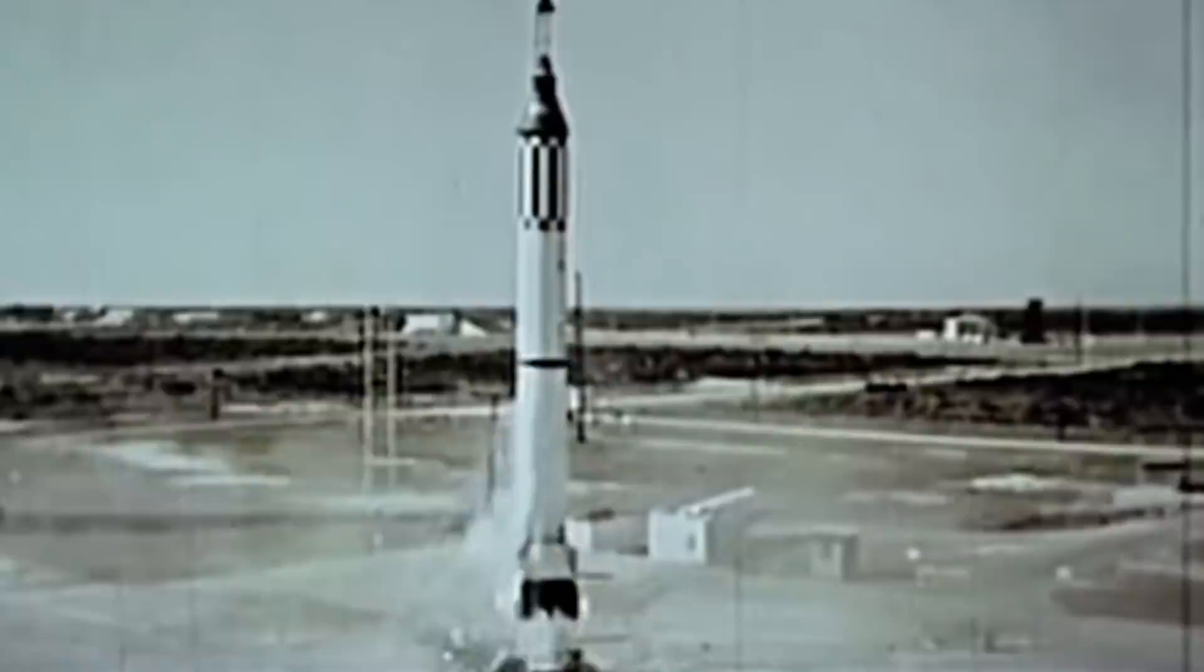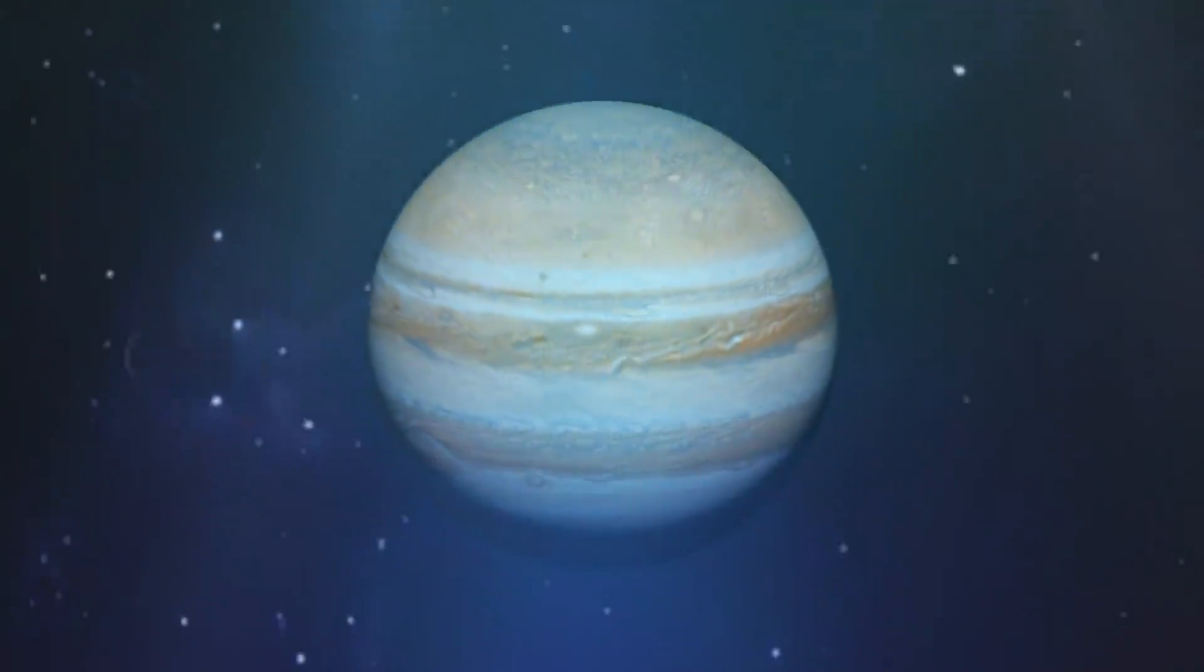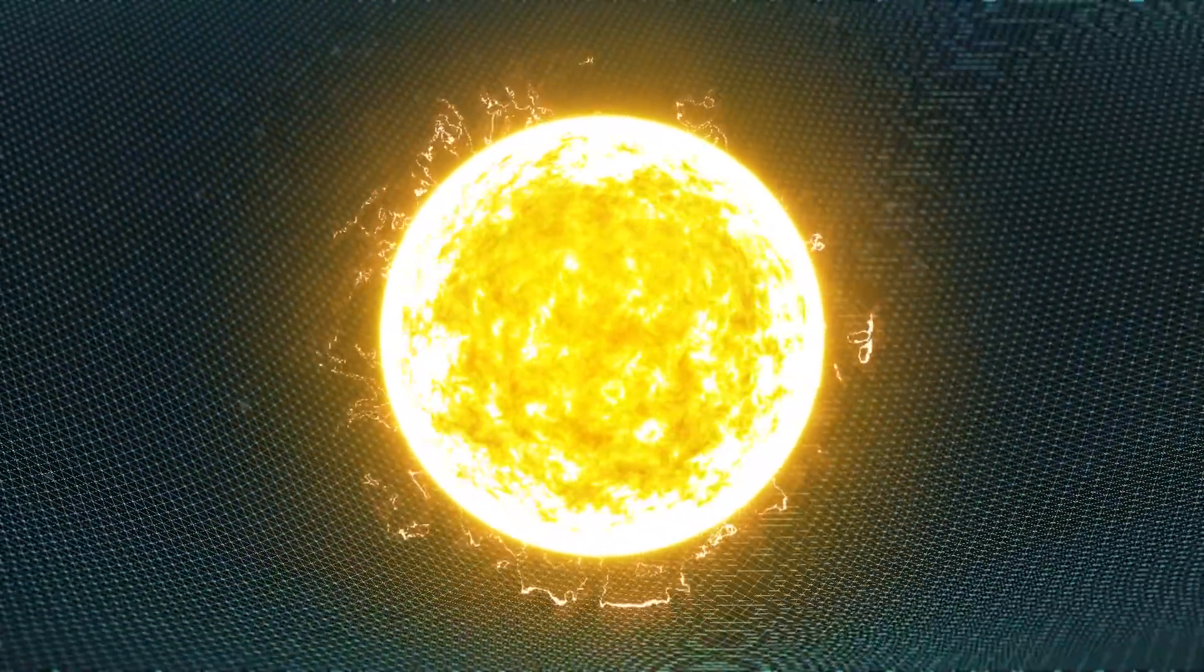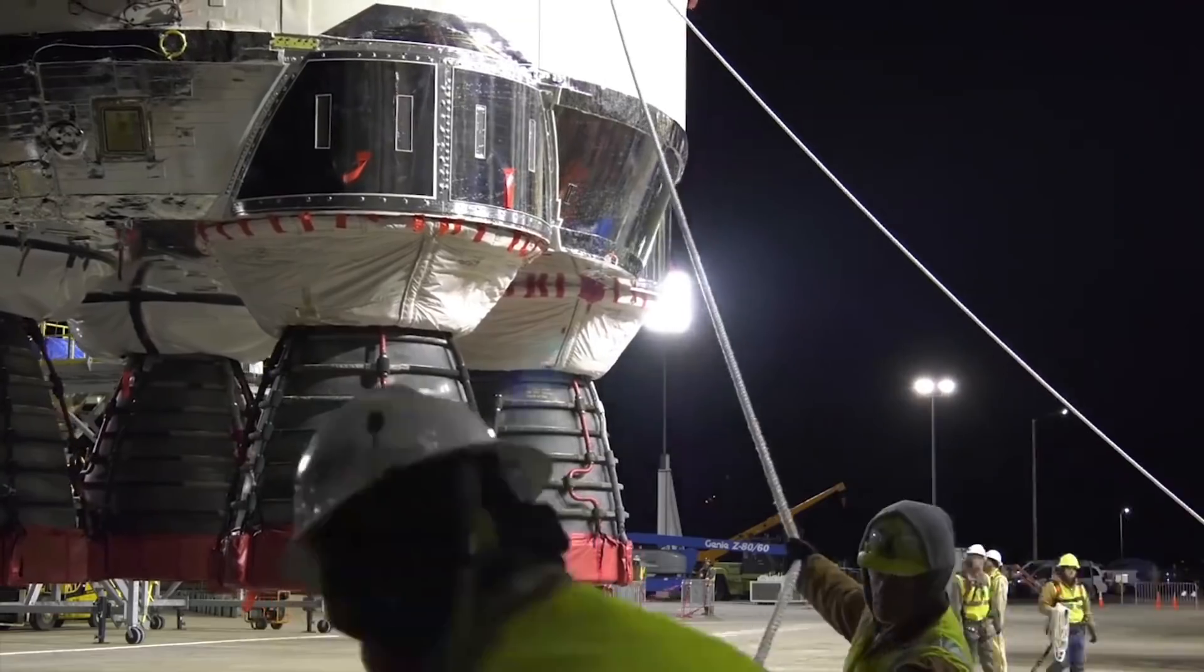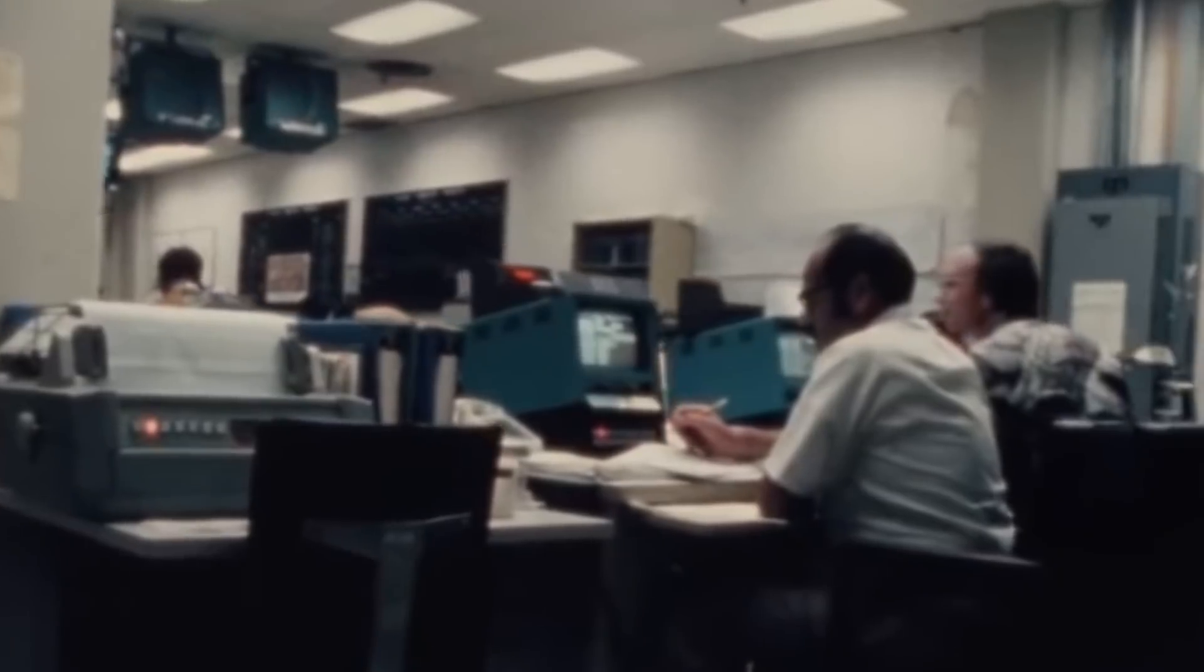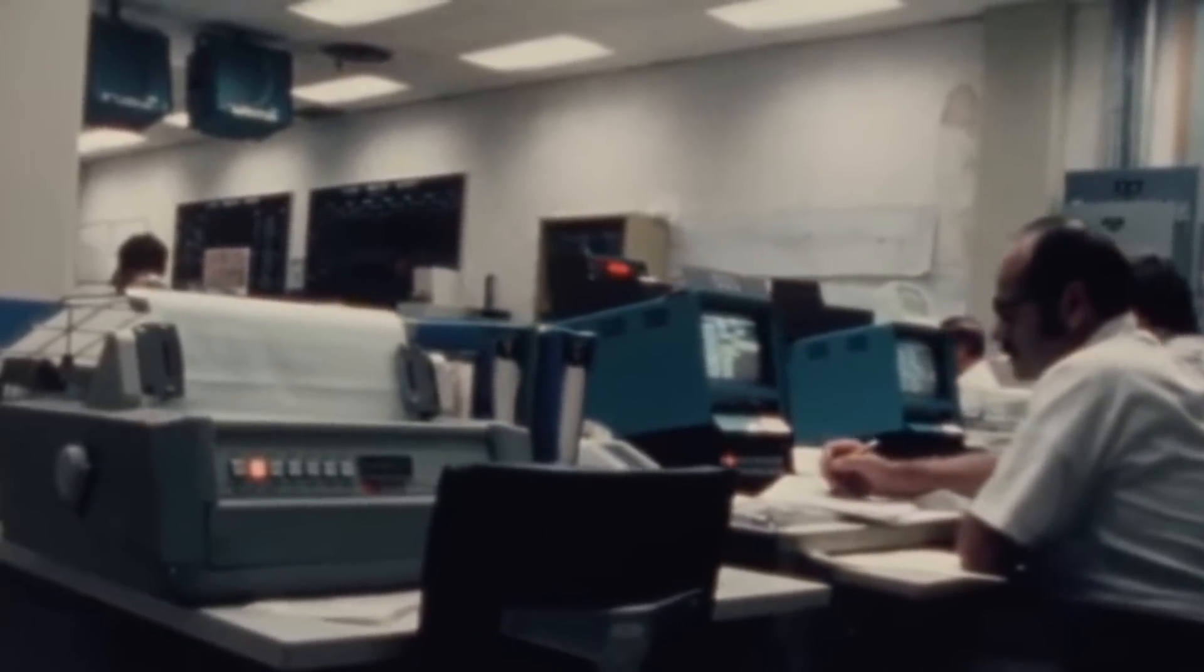But no one knew how to get to the gas giants such as Jupiter, Saturn, Uranus, and Neptune. To escape the gravitational pull of the Sun, it takes a huge rocket, thousands of tons of fuel, and 30 to 40 years to fly. However, Flandro was sure that there was another way.